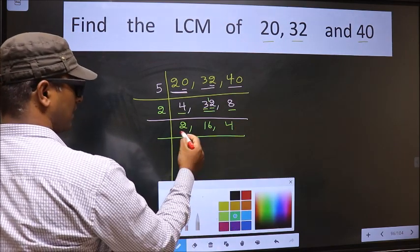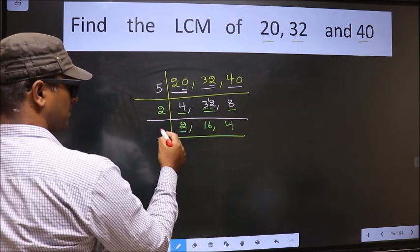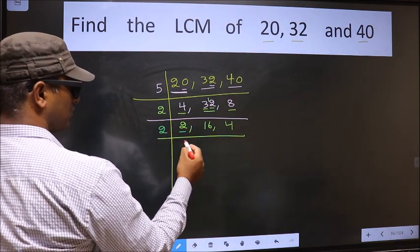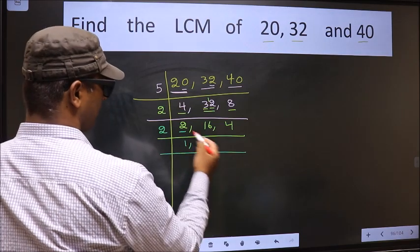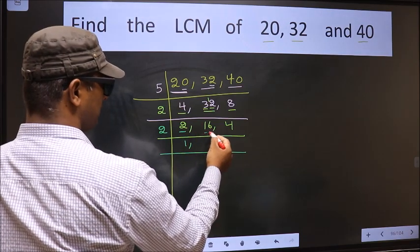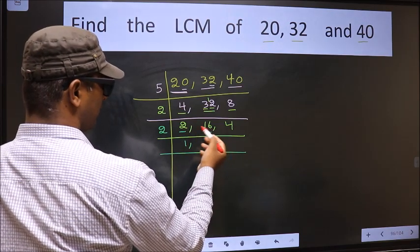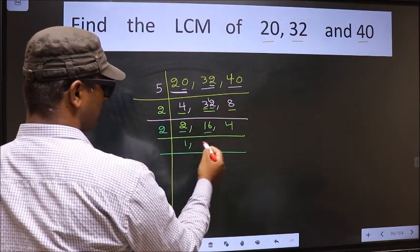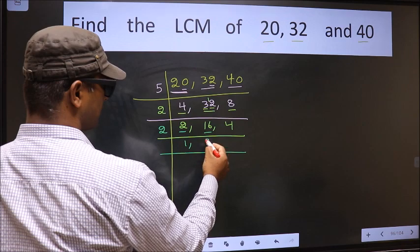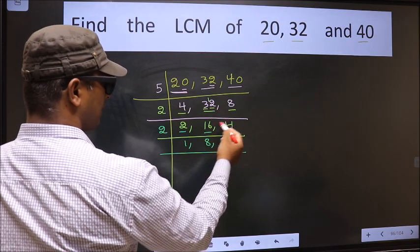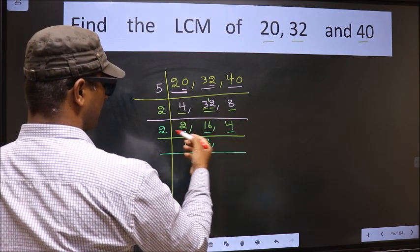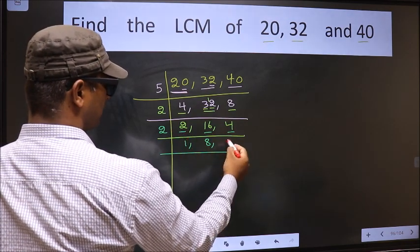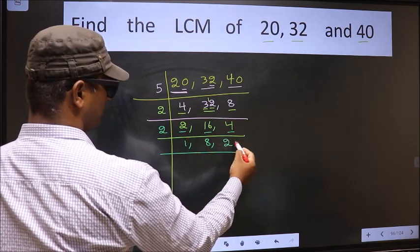Now here we have 2, 16, and 4. 2 is a prime number, so 2 times 1 is 2. The other number 16 — when do we get 16 in the 2 table? 2 times 8 is 16. The other number 4 — when do we get 4 in the 2 table? 2 times 2 is 4.